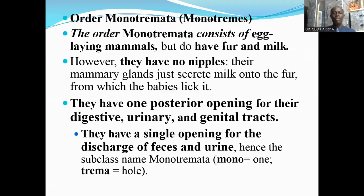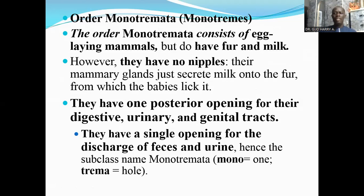The order Monotremata consists of egg-laying mammals, but these egg-laying mammals have fur and milk. So even if they lay eggs, they still have other characteristics of mammals — like fur, which is a type of hair. They also produce milk. However, these mammals do not have nipples like other mammals with mammary glands. Their mammary glands just secrete milk onto the fur, from which the babies lick it.